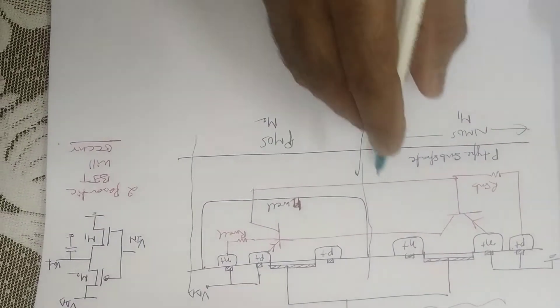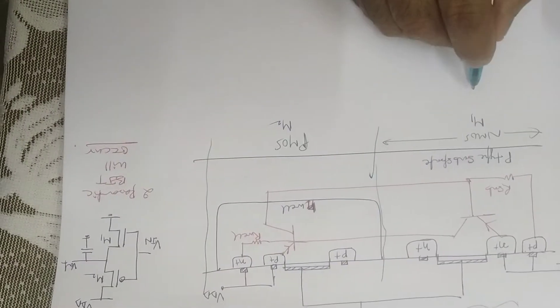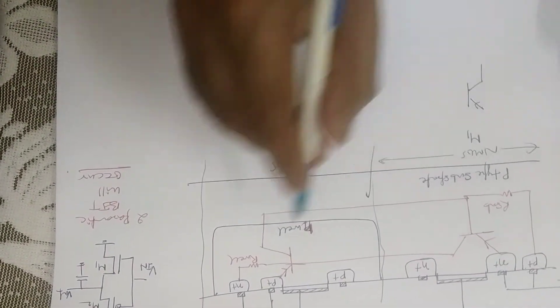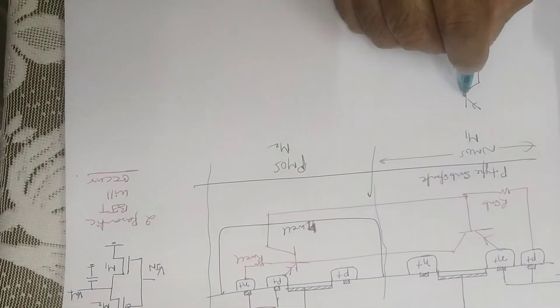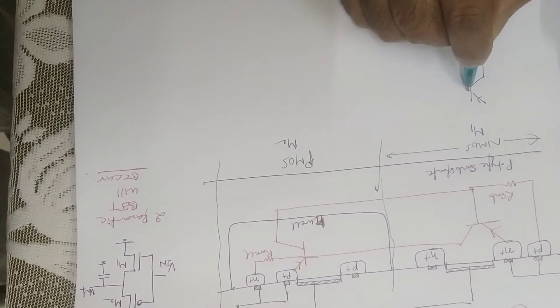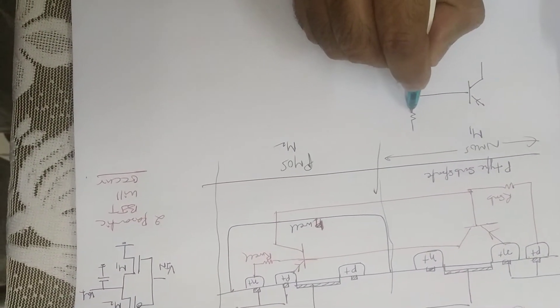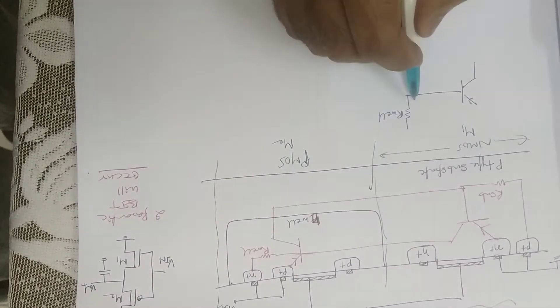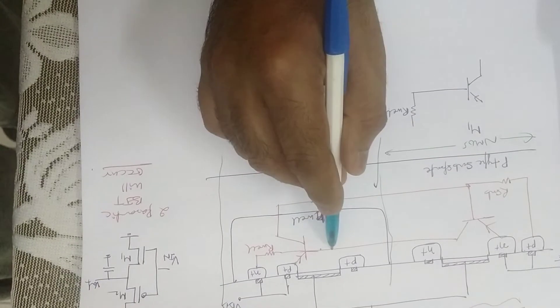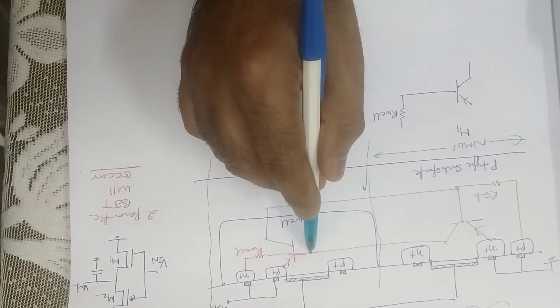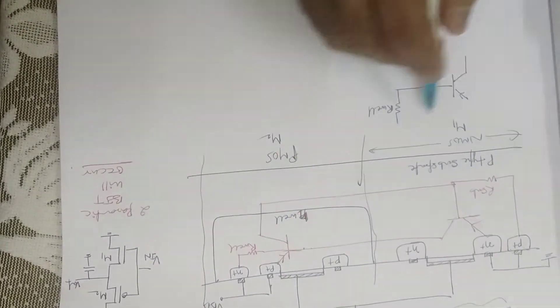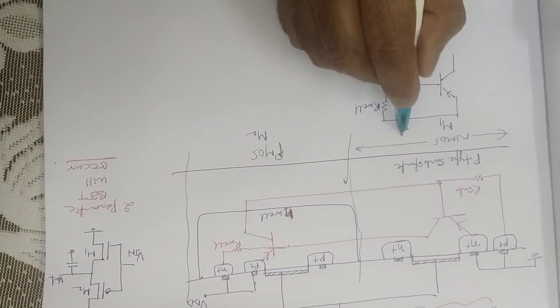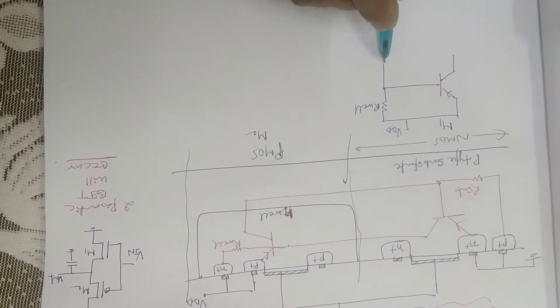So this one is the circuitry. Most of the books and papers we can find this type of circuitry. So how it will make: this one is your PNP transistor and this one is R-well connected to the base of this PNP transistor, and this one is somehow connected to VDD.